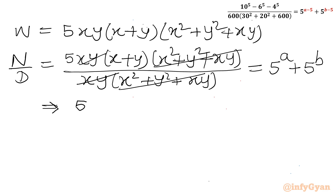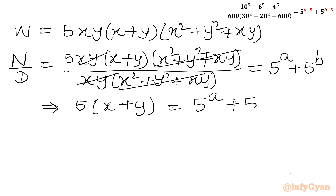We can cancel xy and (x²+y²+xy) from numerator and denominator. What is left on the LHS is 5 times (x+y), equal to 5^a + 5^b.